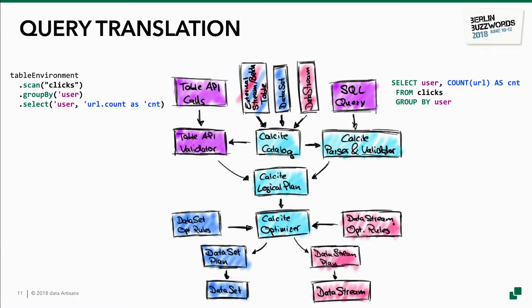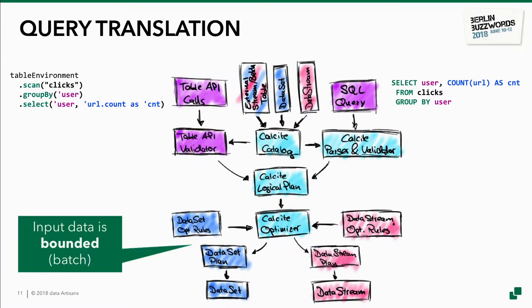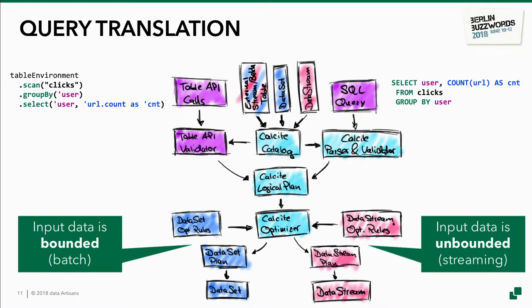Queries are translated through a unified flow. Both the Table API and SQL query representations are translated into a logical plan, using Calcite for optimization. Then we apply optimizations using the Calcite optimizer. Depending on whether the query is executed in a streaming or batch context, it is translated into a Flink DataSet plan — Flink's batch API — or into a DataStream plan for streaming queries. In the batch case the data is bounded, and in the streaming case we create a plan for streaming data.